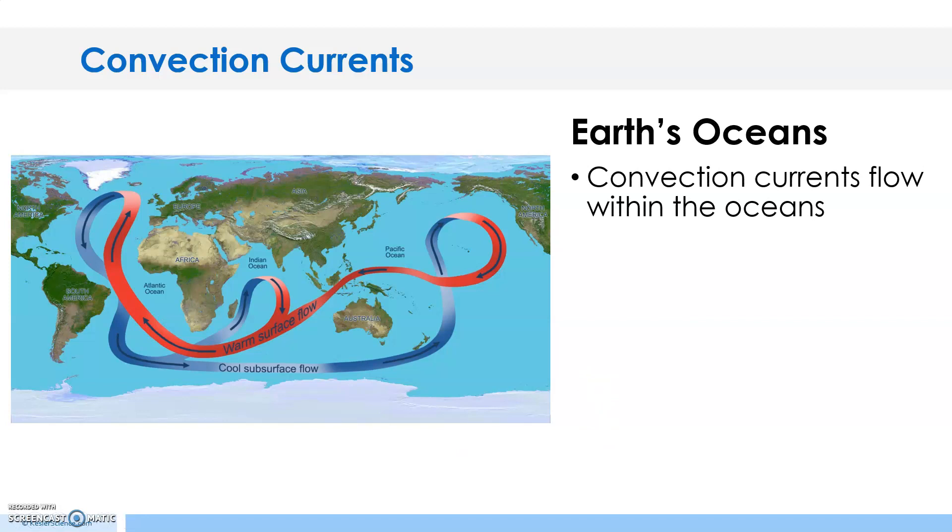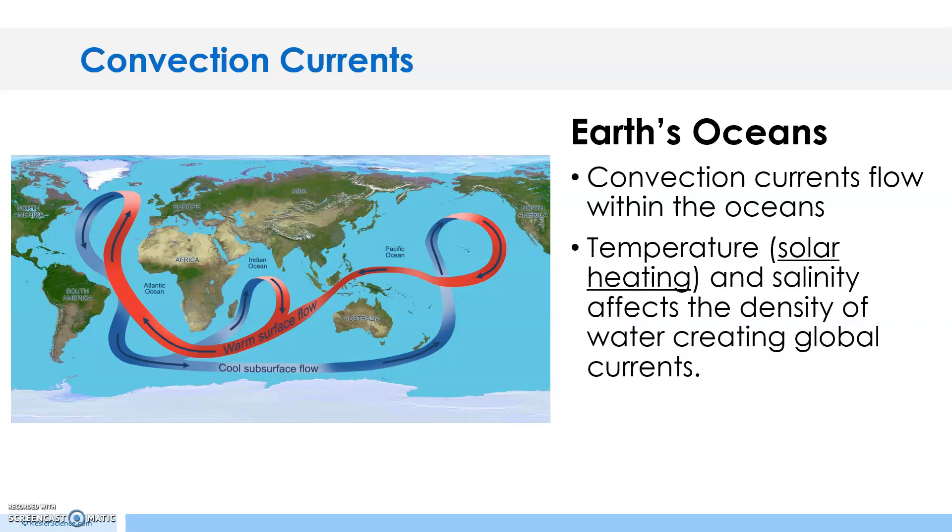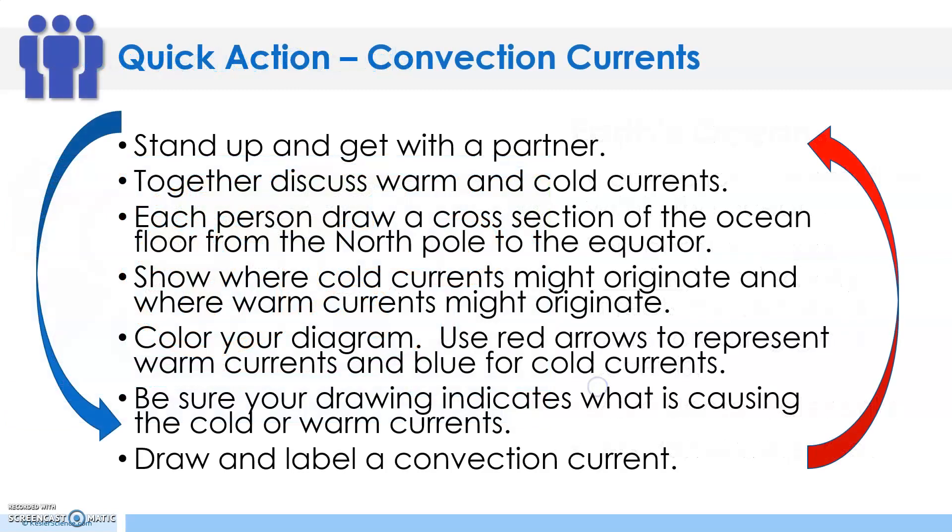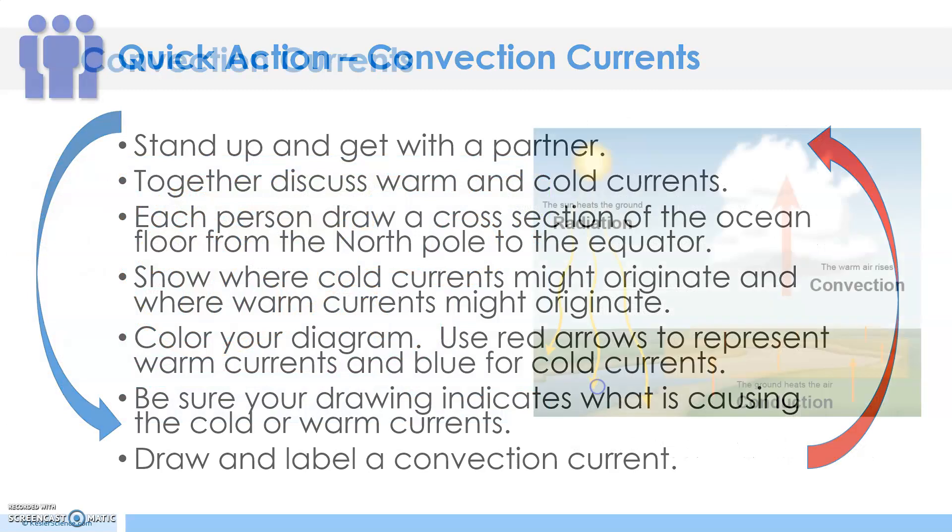Convection currents in Earth's oceans flow within the ocean. Temperature or solar heating and salinity - salinity means the salt content - affects the density of the water, creating global currents. More dense water sinks, that's the cool water. Less dense water rises, that's the warmer water.